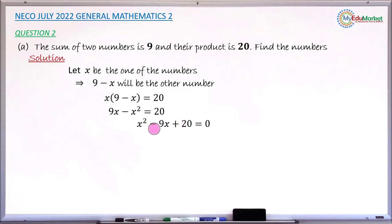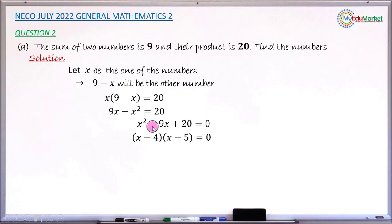Solving by factorization, the left-hand side factorizes to give (x minus 4)(x minus 5) equals zero. We have two brackets multiplied to get zero, so definitely one of those brackets must be zero, or both of them are zero, to give zero as the product.